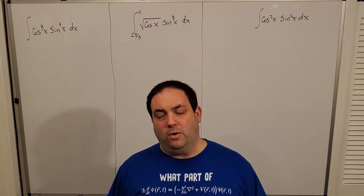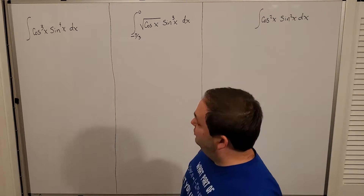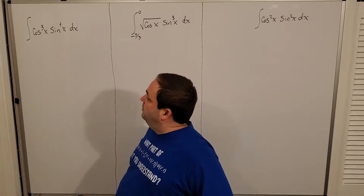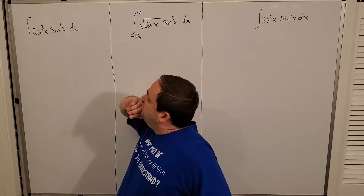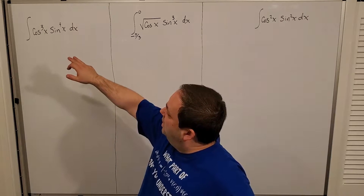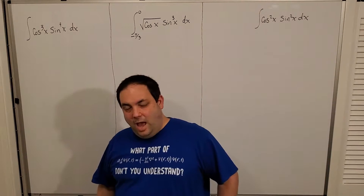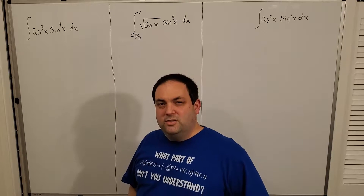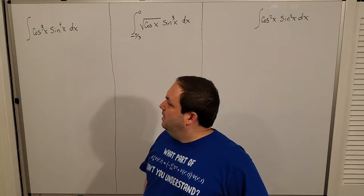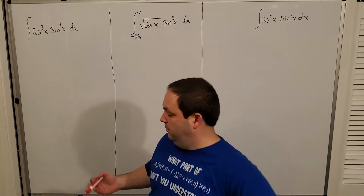The first set of examples are with sines and cosines — probably the most common ones you'd expect. I have the integral of cosine cubed x times sine to the fourth x dx. Looking at this, I notice the cosine exponent is odd. With Pythagorean identities, I can easily convert even powers like squares and fourth powers, but odd powers are a little harder. So instead, I'll save one cosine, which turns the remaining cosines into an even power.